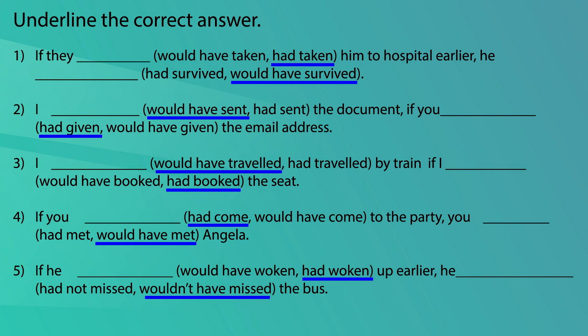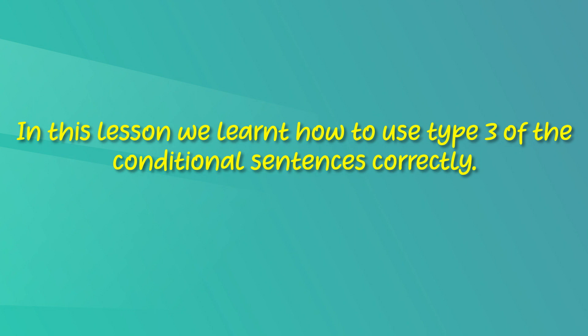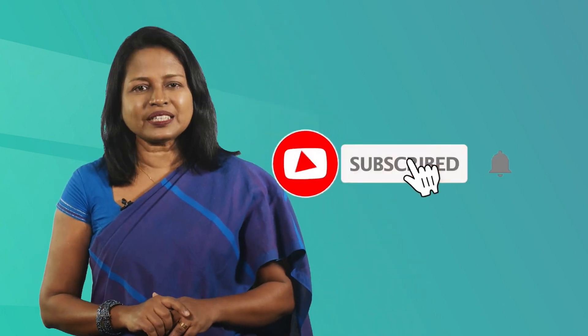I hope you could get all the answers correct. Children, that marks the end of our lesson. In this lesson we practiced grammar — we learned how to use type 3 of the conditional sentences correctly. This is the last lesson of a series of three in which we learned all three types of conditional sentences, also called if clauses. We also did several activities to practice how they are used. Please subscribe to our channel to watch all these useful lessons. Goodbye.